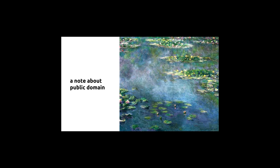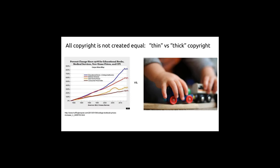Usually institutions do this through licensing — you can get a high-resolution copy of a Monet painting if you buy it and agree to license terms. But the institution doesn't own the material itself. If you have a legally acquired copy of that work that isn't subject to those license terms, you can use it regardless of what that institution might be asserting about its use.